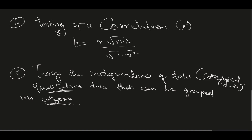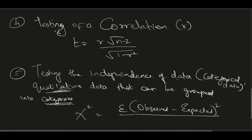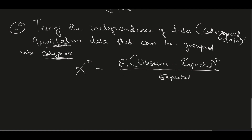For testing independence of categorical data, the formula is again chi-square: χ² = Σ (O - E)² / E, where O is the observed value and E is the expected value. There is also a separate video on how to calculate this test for independence of data.